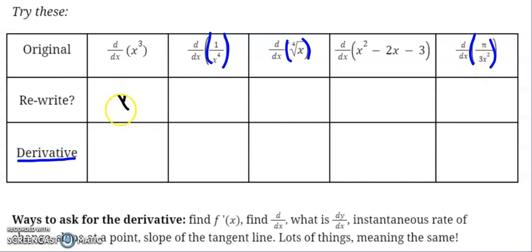x to the third doesn't need a rewrite, so I'm just going to write it as it is. Its derivative then becomes 3 times x squared.